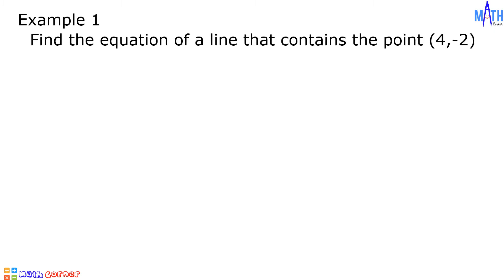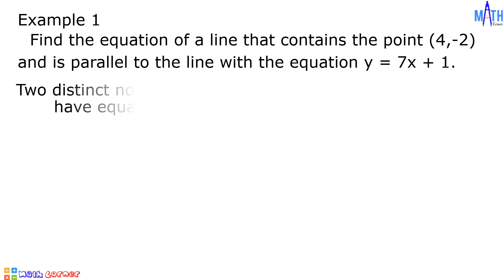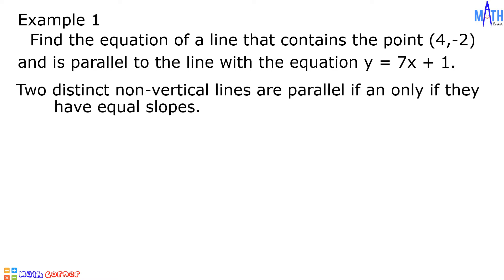Example number 1: let us find the equation of a line that contains the point (4, -2) and is parallel to the line with the equation y = 7x + 1. To find the equation, take note that two distinct non-vertical lines are parallel if and only if they have equal slopes.